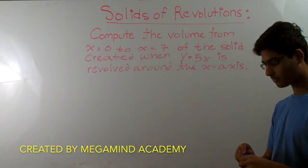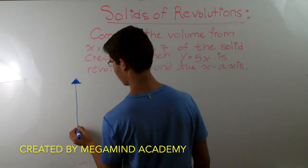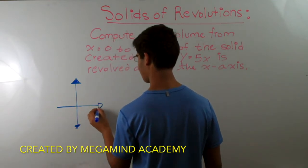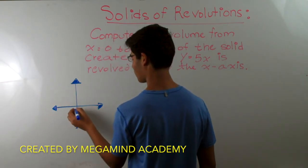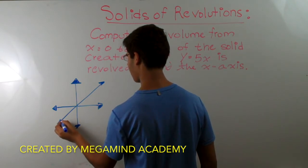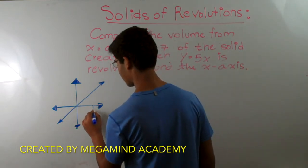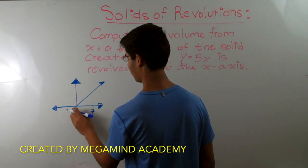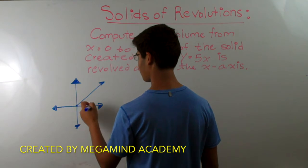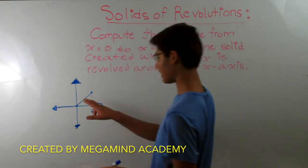So let's draw this out first. Let's draw the xy plane — this is the y-axis and this would be the x-axis. Now y equals 5x would look something like this, where it has a slope of 5 and it's going through the origin. In this problem, we're only looking from x equals 0 to x equals 7, so we're looking at just this little segment here, from the origin to the x equals 7 point.